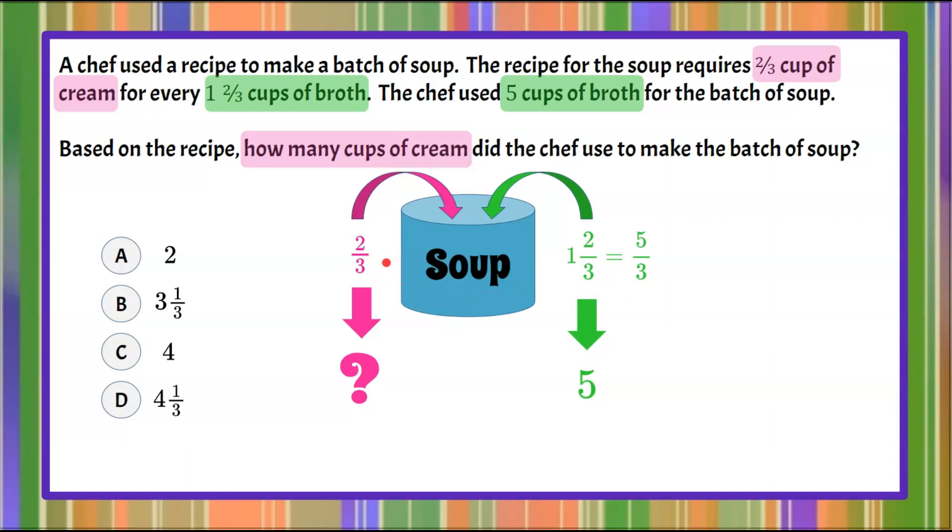So let's write our proportional relationship. We're going to start with two-thirds cup of cream and we don't know how many cups of cream we need now that we've taken the five-thirds cup of broth and we're going to enlarge that quantity to five cups.